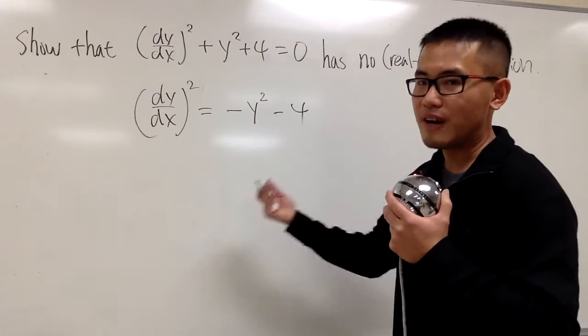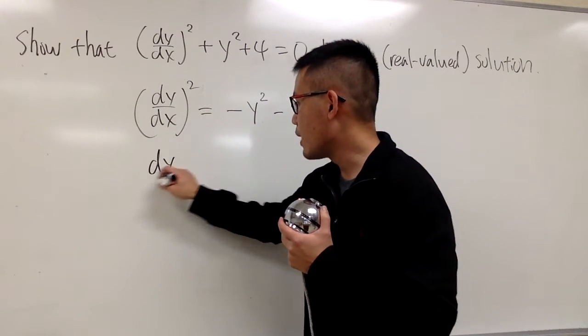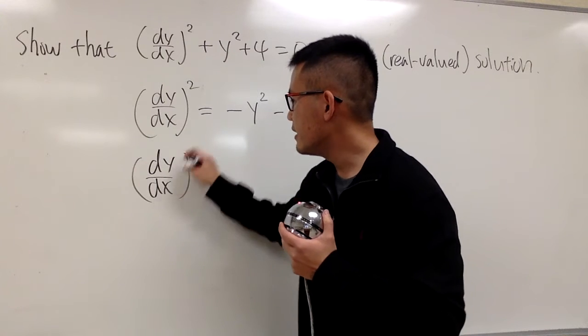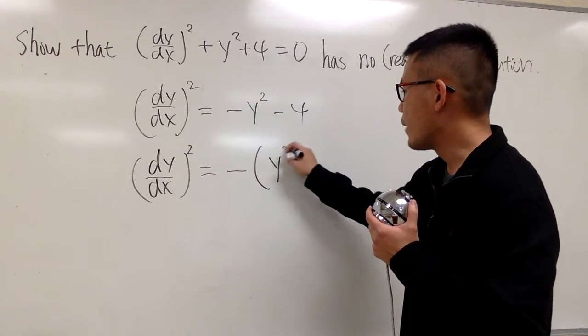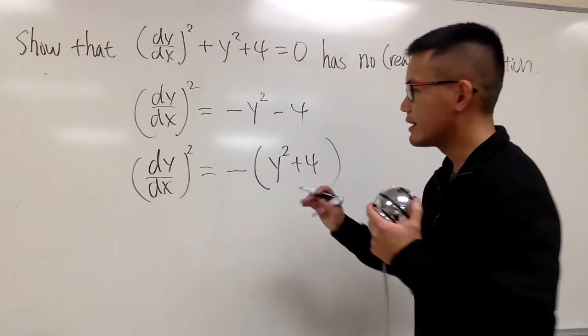And now, you see both of these are negative, so I can factor it out. You will have dy dx and then square, this is equal to negative, and then parentheses, y-square plus 4, like this.